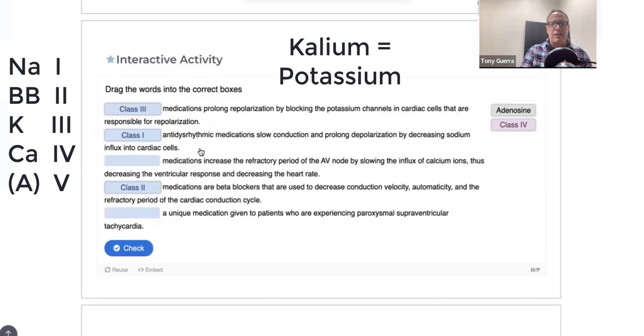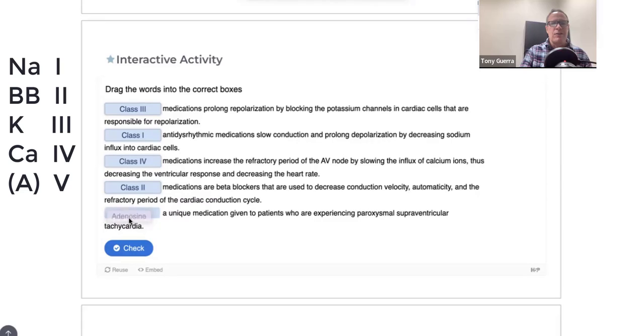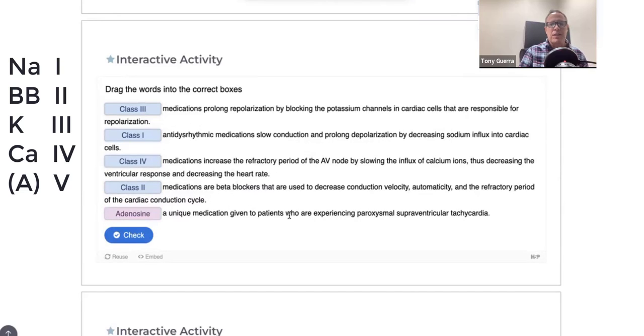Class 4 medications, we're going to match this, increase the refractory period of the AV node by slowing the influx of calcium ions. So this is our C-A, thus decreasing the ventricular response and decreasing the heart rate. But you can also use the A as Class 5, which is this adenosine, a unique medication given to patients who are experiencing paroxysmal supraventricular tachycardia.